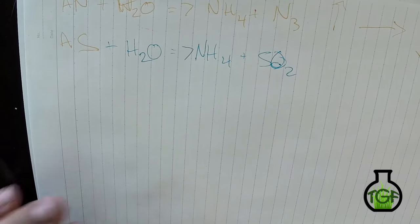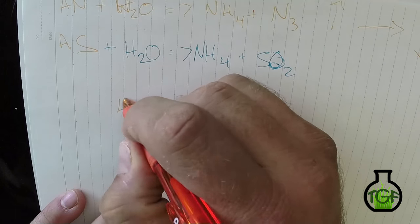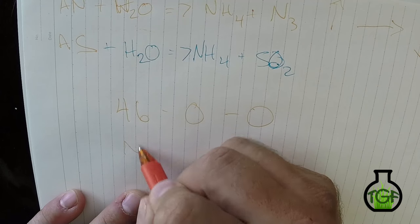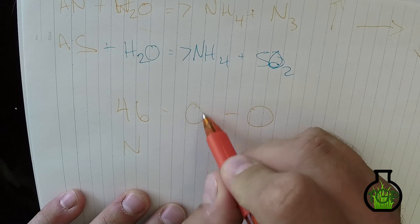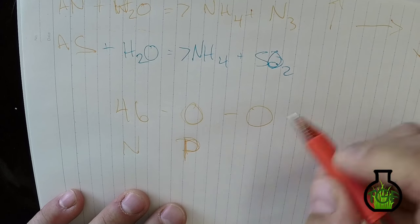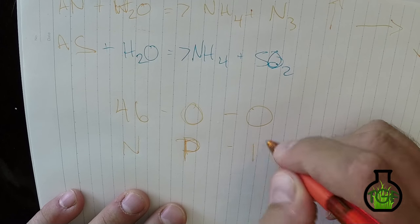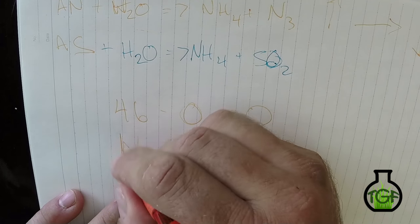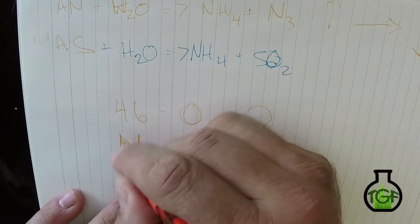So let's jump into the rest of the equation. As we talked about before, we were talking about a 46-0-0 — this is N. The middle number here is P, phosphorus. And then our last number is K, potassium. N, P, K. So let's talk about phosphorus first.